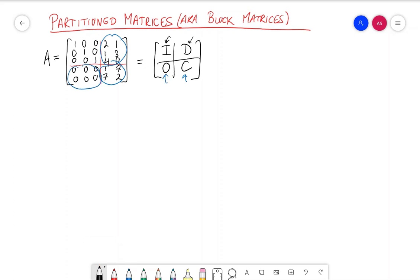Another example is the matrix B equal to this, which we can partition into this zero matrix here and this two by two identity matrix here.